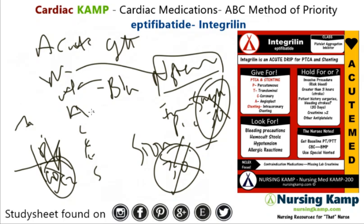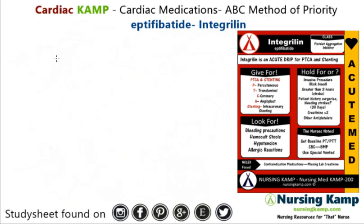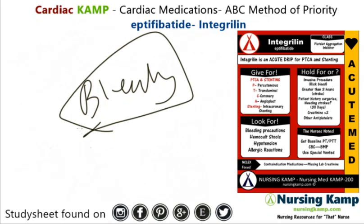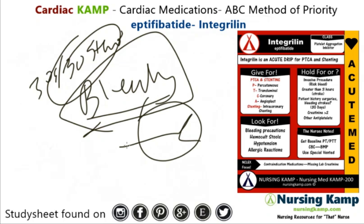We get an assessment — assess for bleeding. Other labs: BUN, creatinine, and platelets. Eating is not an issue with this medication. What stands out: it's a critical drip given for NSTEMIs, PTCAs, and stenting, and it's given along with aspirin and Plavix. Monitor for bleeding precautions. Previous surgeries or strokes — hemorrhagic strokes especially — are important. There are a lot of labs with this: coags, creatinine, and platelets.